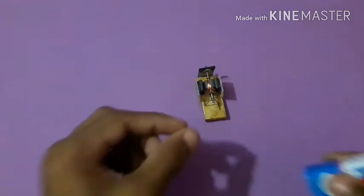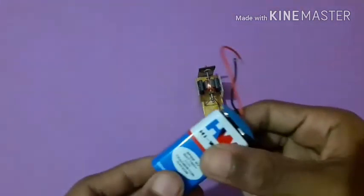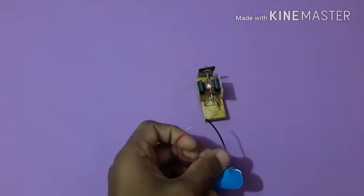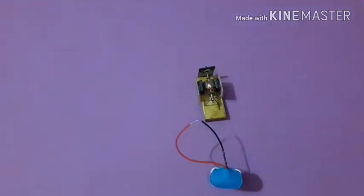For a demonstration of how the DC motor works, I have taken a 9 volt battery. Now I am going to show you how this motor spins.